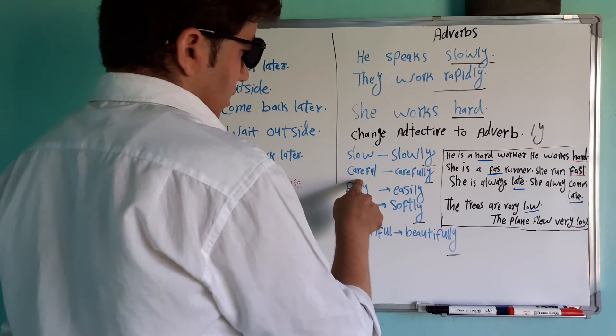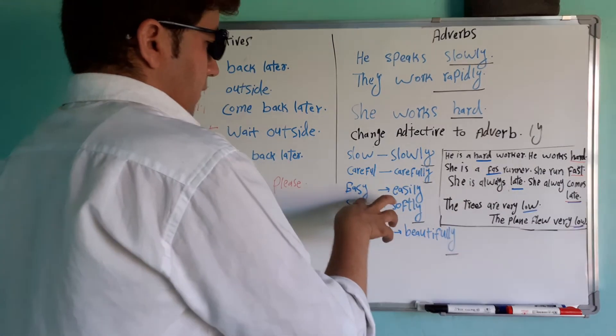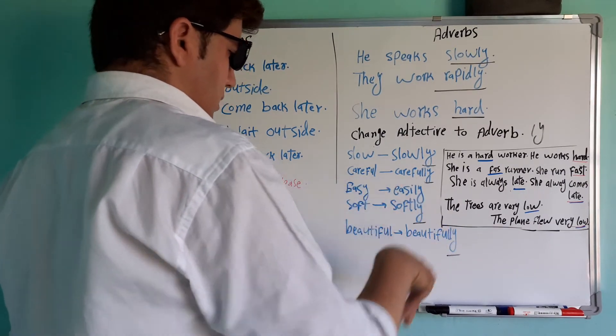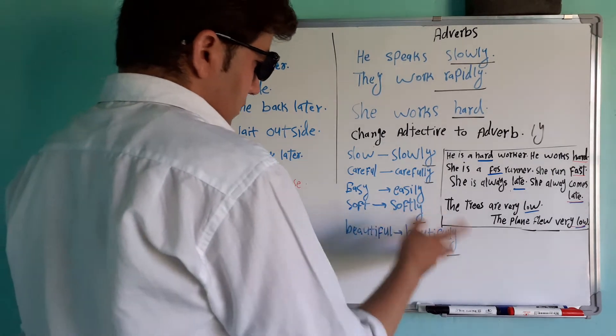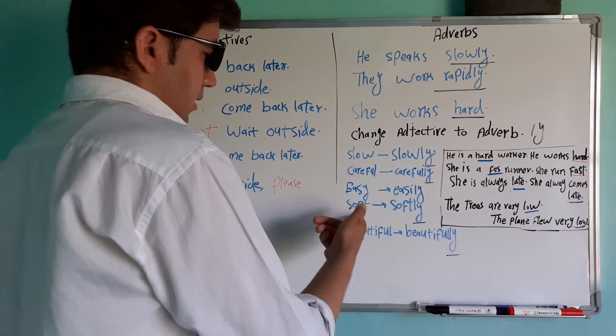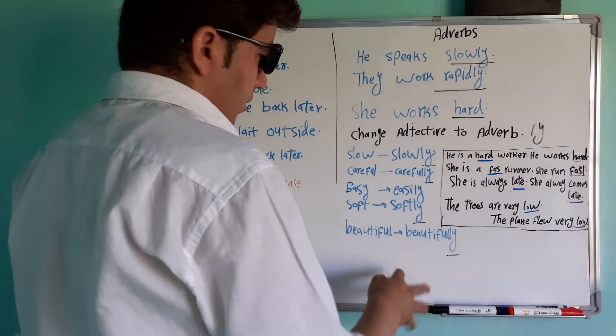مثال‌ها: slow — slowly. Careful — carefully. Easy — easily — آسانی. Soft — softly — نرم، نرمی. Beautiful — beautifully. اینا adjective هستن و اینا adverb هستن — اینا صفت هستن، اینا قید هستن.